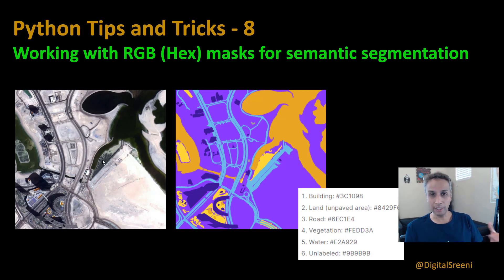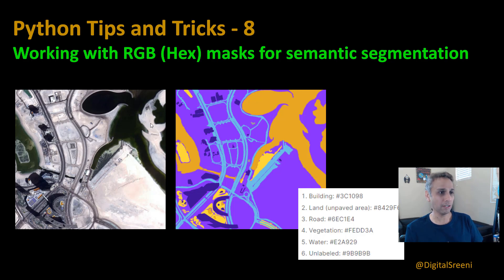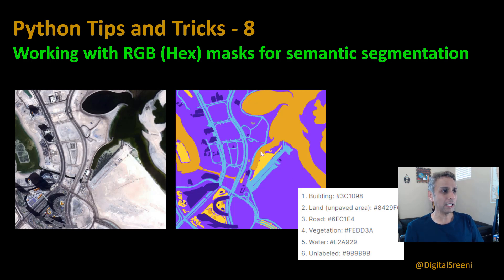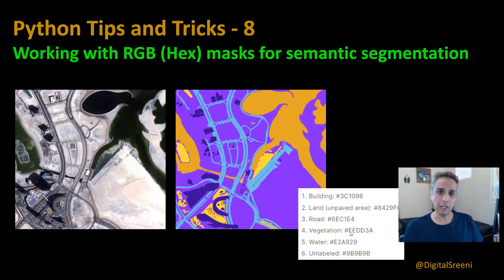If you have these types of masks, how do you use them for semantic segmentation? In this example, this is aerial or satellite imagery, and you have a corresponding mask. The water is in an orange shade, yellow represents something else, purple and so on. The only thing I got from the documentation is these hex codes — buildings, land, road, vegetation, and so on.